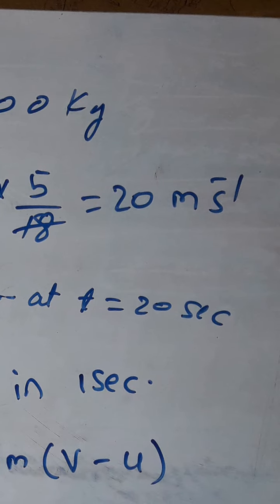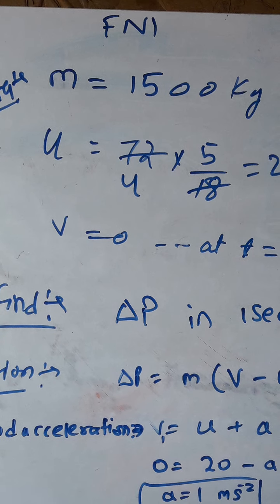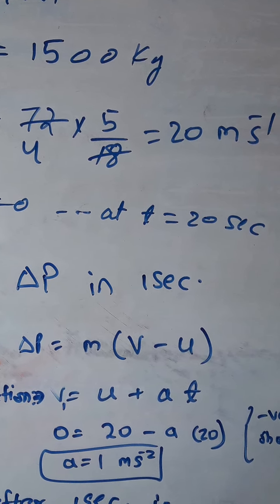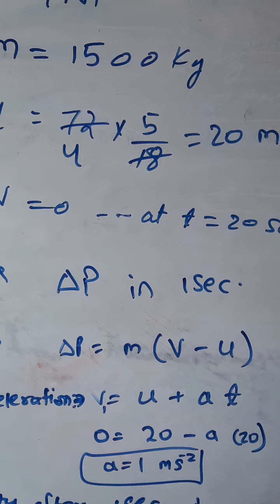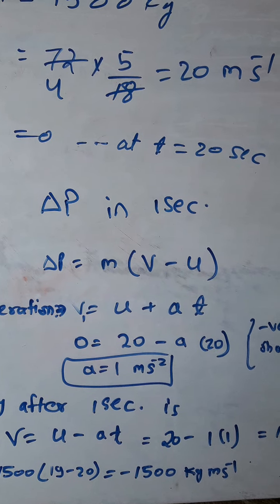That is 20 meters per second by multiplying by 5/18, the conversion formula. Final velocity at the end of 20 seconds is 0. Now what we have to find is the change in momentum in 1 second.